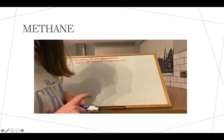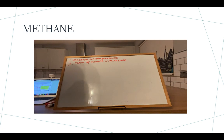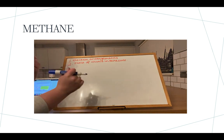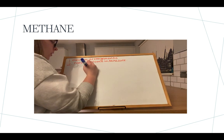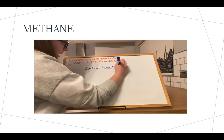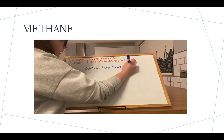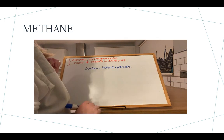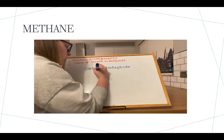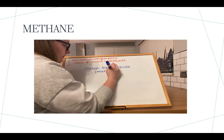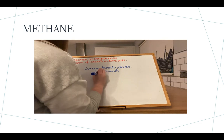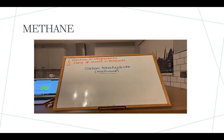Our last example of bonding diagrams is something called carbon tetrahydride. You are going to come into contact with carbon tetrahydride later on in your third year, but you will call it methane. Carbon tetrahydride is also called methane — just for future reference.